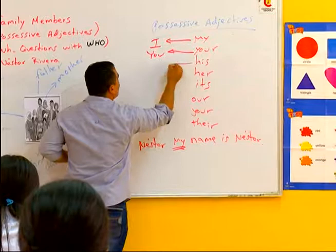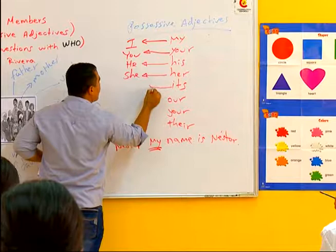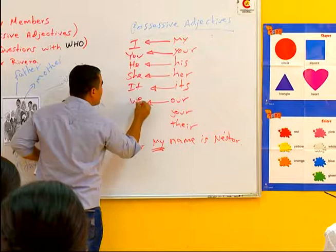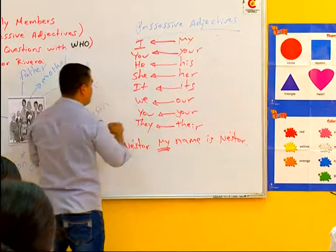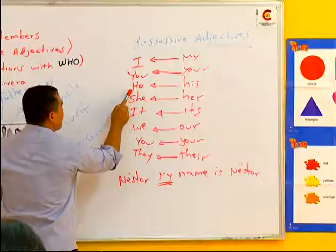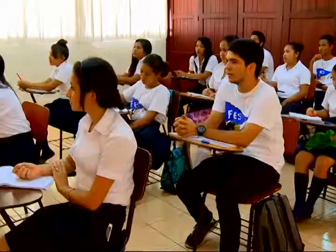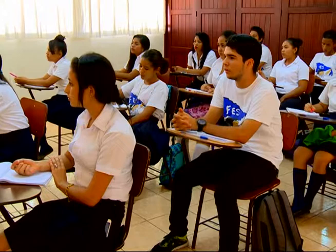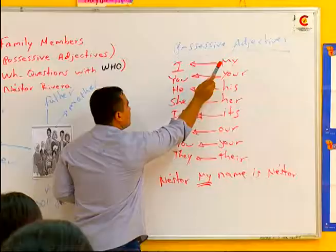I, you, he, she, it, we, you, and they. Repitamos: I — my. You — your. He — his. She — her. It — its. We — our. You — your. They — their. My, your, his, her, its, our, your, their.